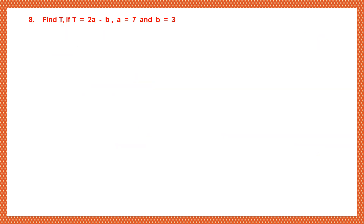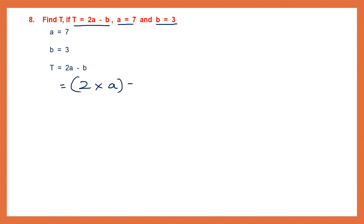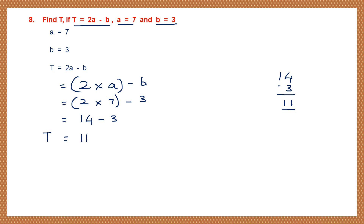Question 8: Find T if T = 2A − B, given A = 7 and B = 3. Substituting: T = 2 × 7 − 3 = 14 − 3 = 11. So T = 11. With that, we come to the end of this exercise. Thank you, children.